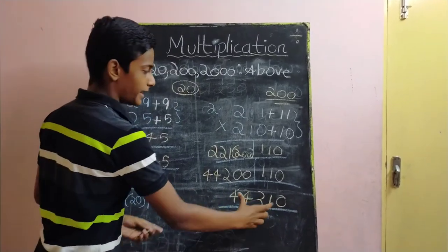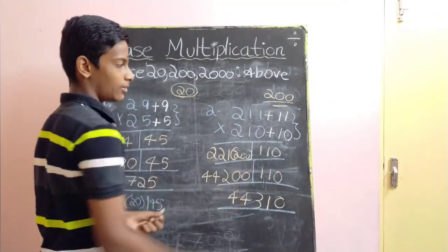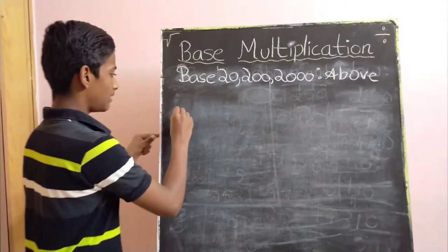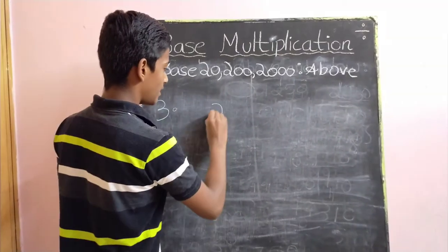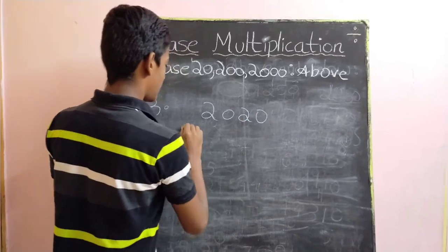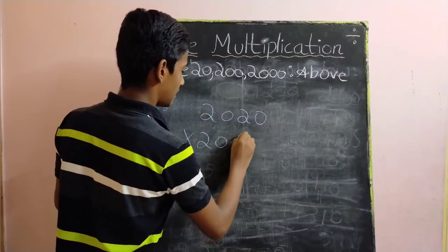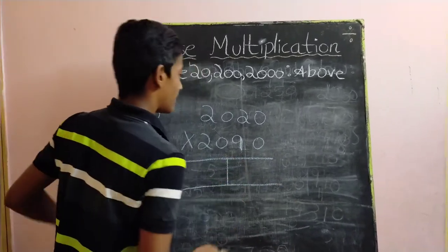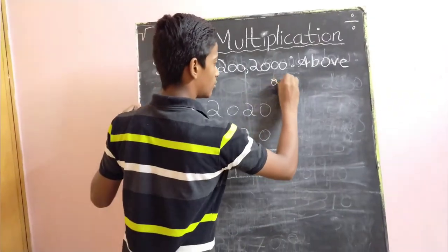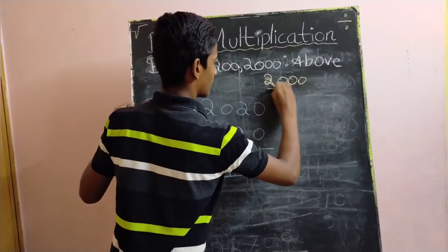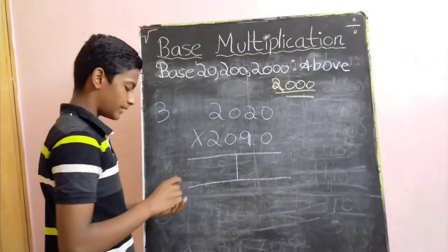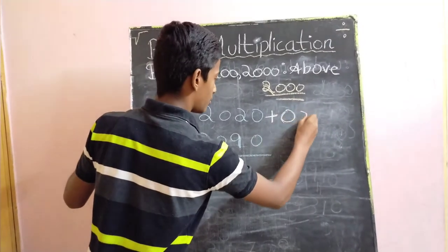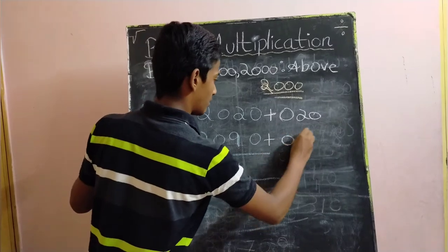Now let's look at another sum with 2000 as our base number. Let our third example be 2020 — that is this year — into 2090. The first step is the identification of the nearest secondary base, which here is 2000. The second step is the identification of the difference, so in this case it is plus 020 and plus 090.